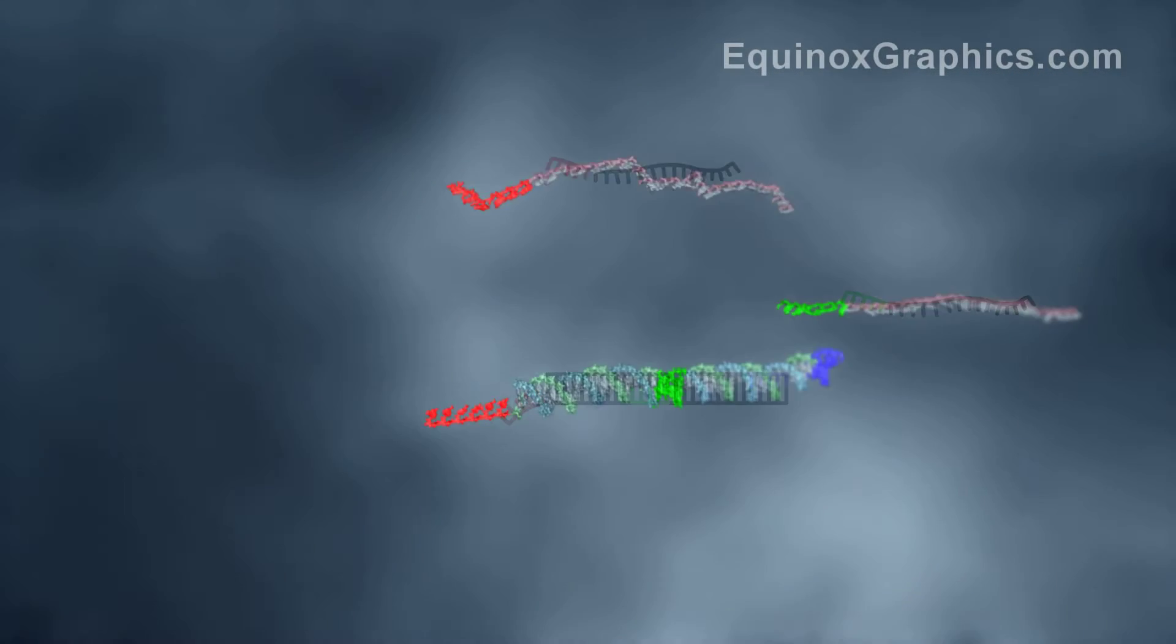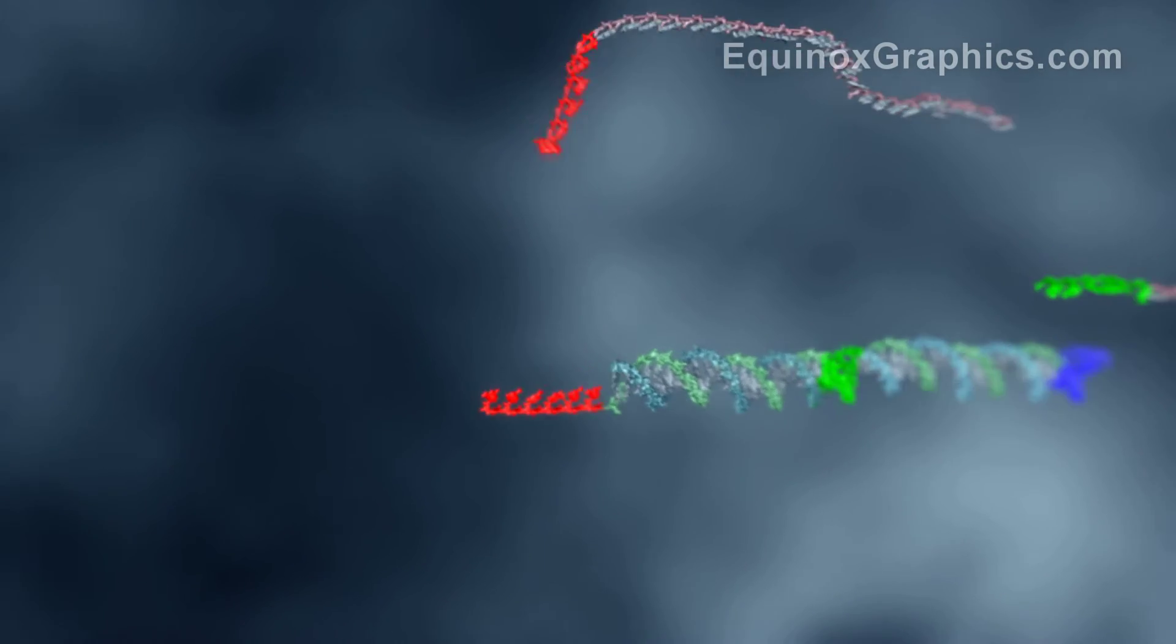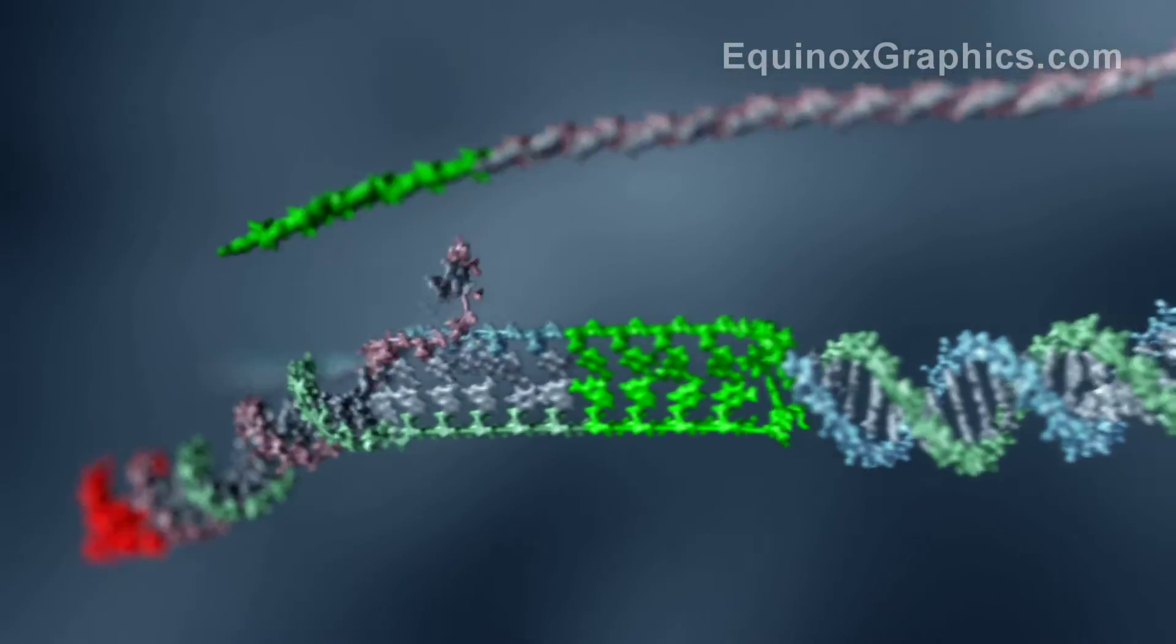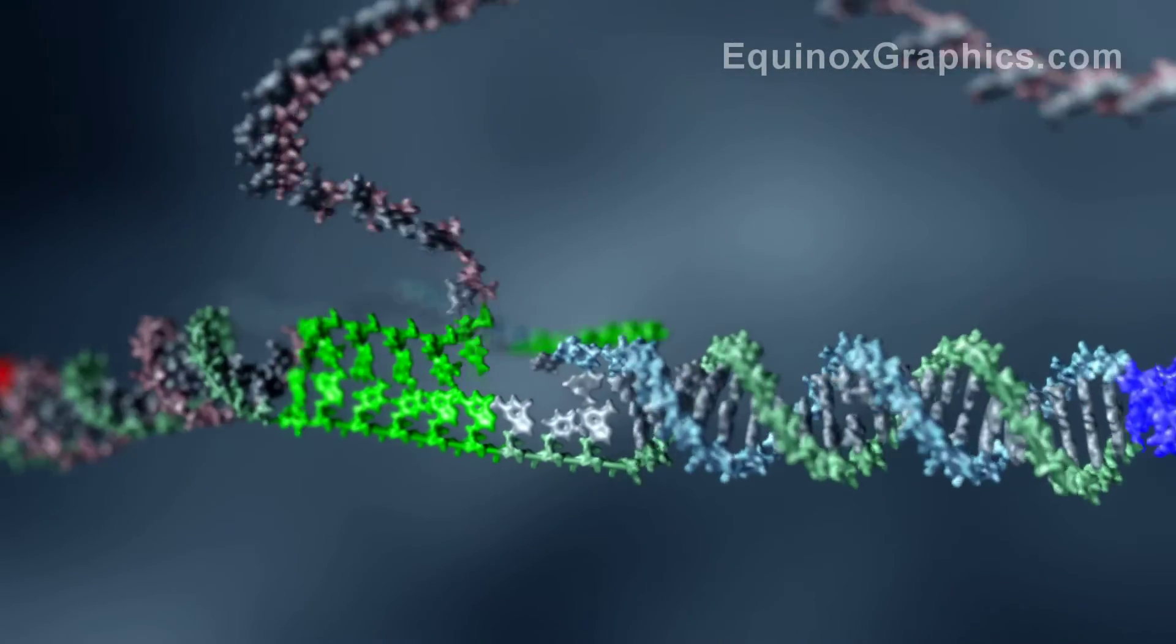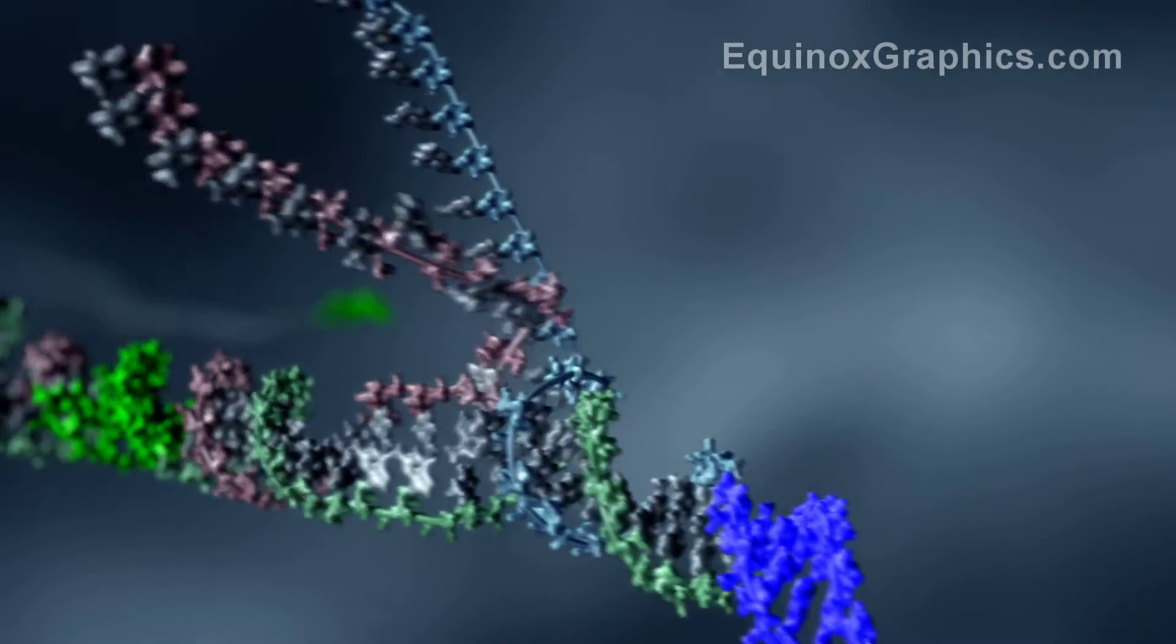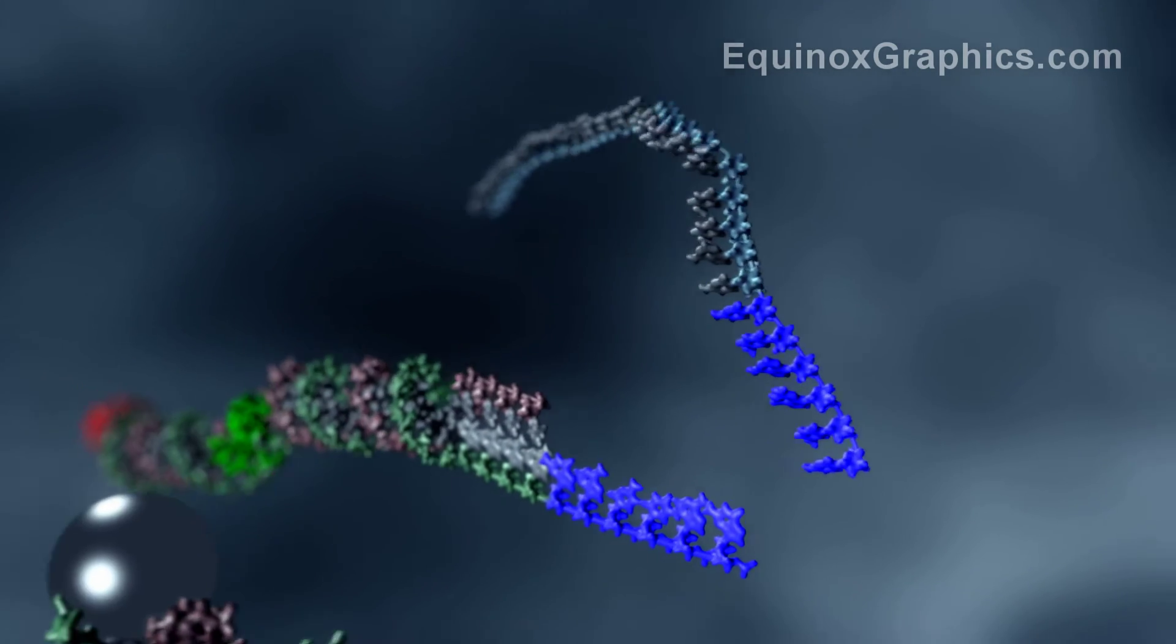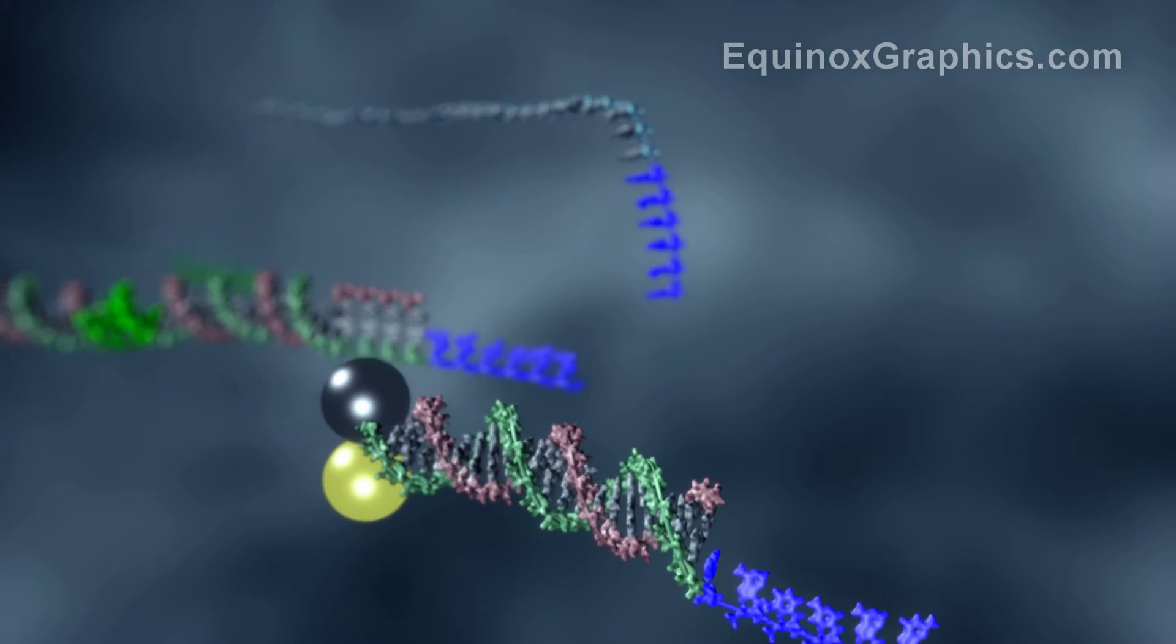The first input strand binds to the complementary toehold, displacing the attached strand. This then reveals a second toehold which corresponds to the second input strand, which is then able to displace the output strand. Only when both input strands are present will the output strand be released.